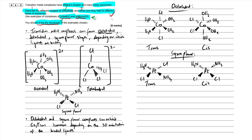The other type of isomerism in transition metal complexes is optical isomerism. Octahedral complexes can form optical isomers, which are non-superimposable mirror images of one another. Just as with cis-trans, whenever you draw one isomer you must always draw the other.